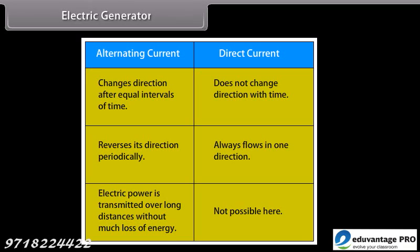Electric generators operate based on electromagnetic induction. That is, whenever a conductor moves to a magnetic field, a current is induced in this conductor. If a magnet is spinning inside a coil, alternating current is induced in the coil. Alternating current changes direction after equal intervals of time. The other type of current is direct current which does not change direction with time.